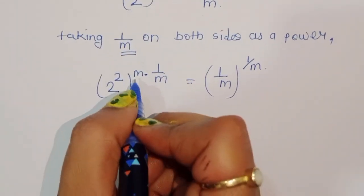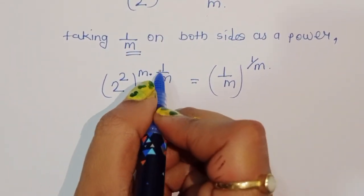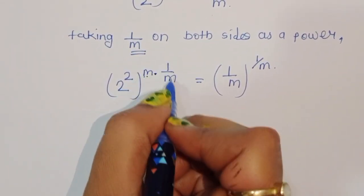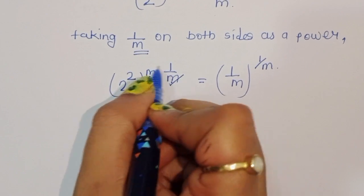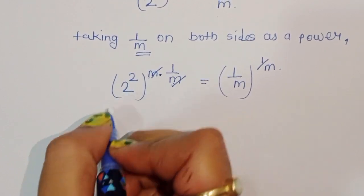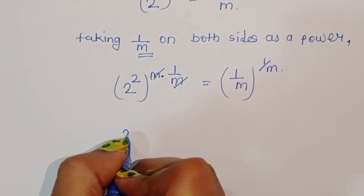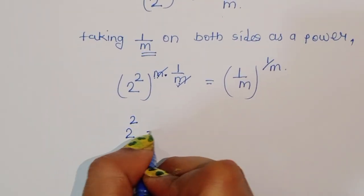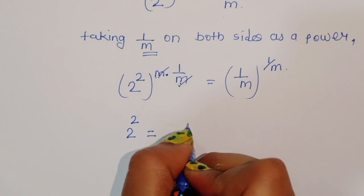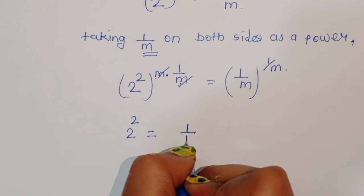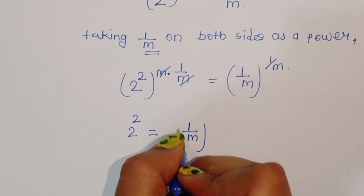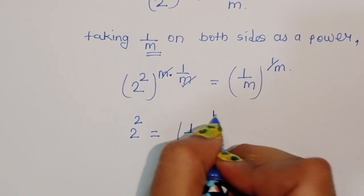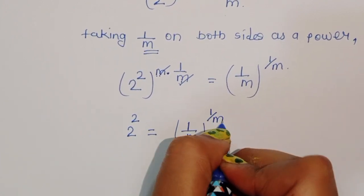Now you can see here m times 1 upon m — this will cancel. So we can write 2 power 2 is equal to 1 upon m, power 1 upon m.